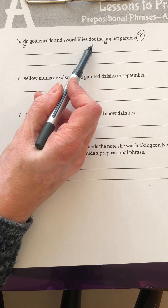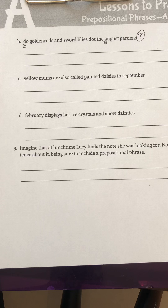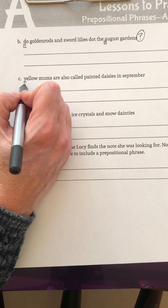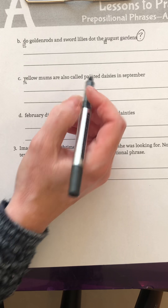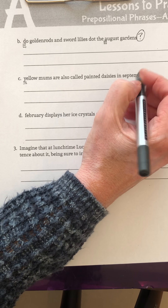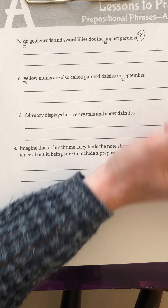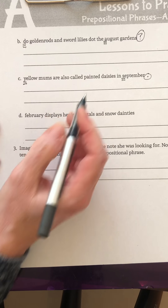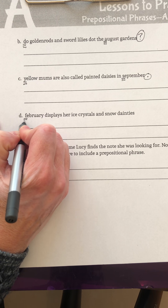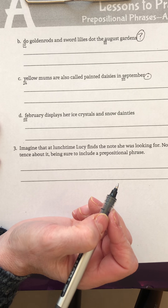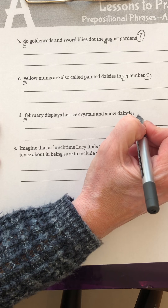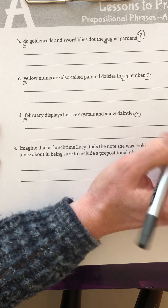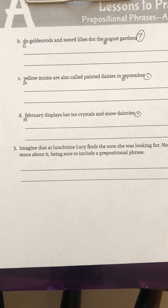Do golden rods and sword lilies dot to the August gardens, question mark. Letter C — you're checking for three underlines under yellow and S for September, and a period with a circle around it. That's how you edit that sentence. Check to make sure yours looks like mine. For letter D, February is the beginning word of the sentence — it is also a month of the year. There are no other capitalizations in that sentence, so we just need to finish with a period, and there you have it.